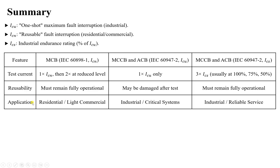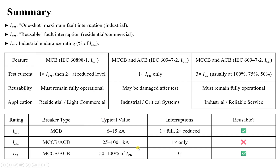Miniature circuit breakers following IEC 60898-1 are used for residential or light commercial applications, while molded case and air circuit breakers following IEC 60947-2 are used industrially. After interrupting, ICN and ICS breakers must remain reusable — the breaker can be operated again after service. However, for ICU, it can interrupt just once and cannot be reused.